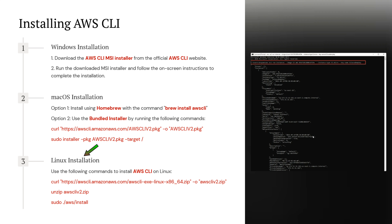The third one is Linux installation. We can use the following three commands to install the AWS Command Line Interface on Linux: first, download the AWS CLI v2 zip file using the curl command; then unzip the zip file; then using sudo aws install, we can install AWS CLI on the Linux operating system.